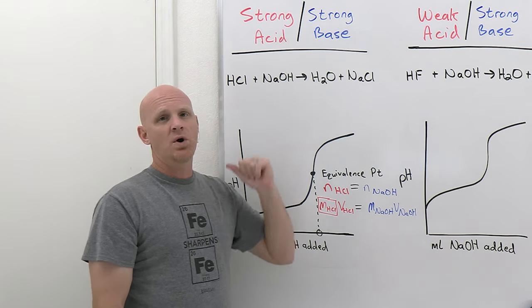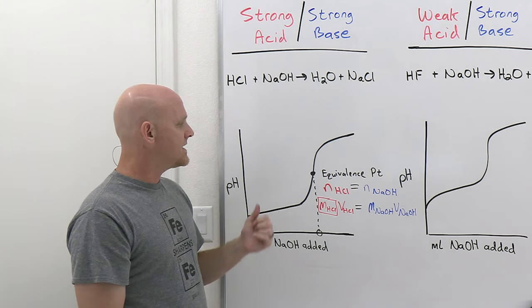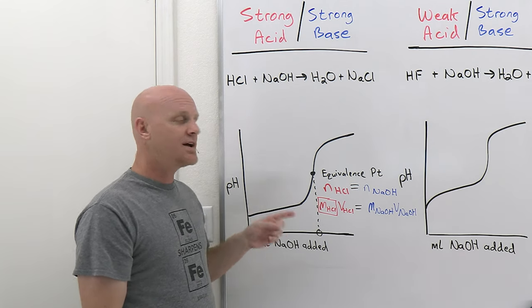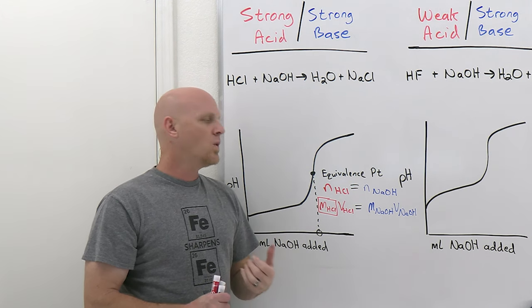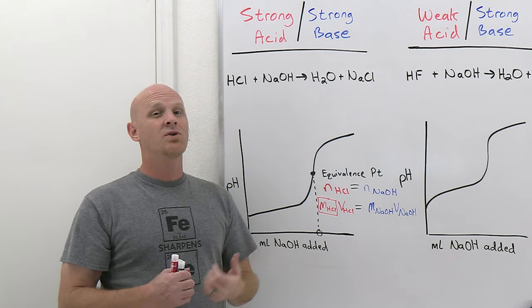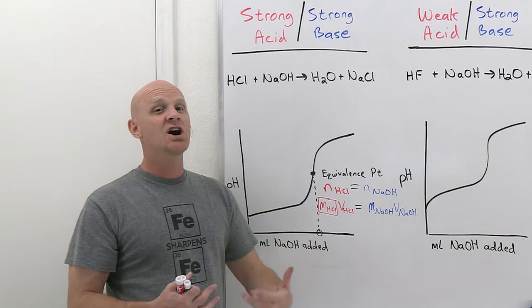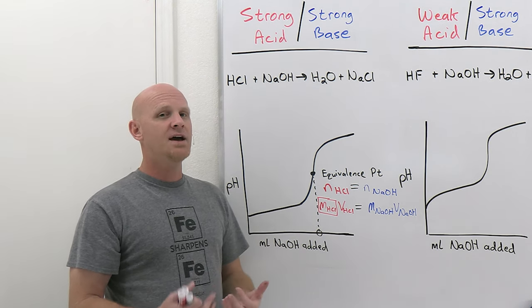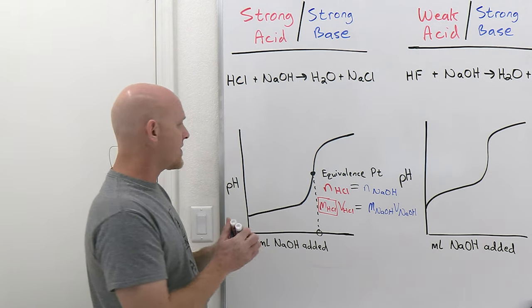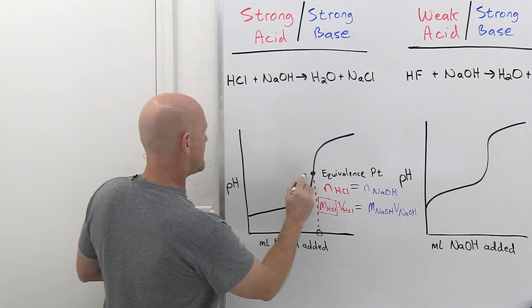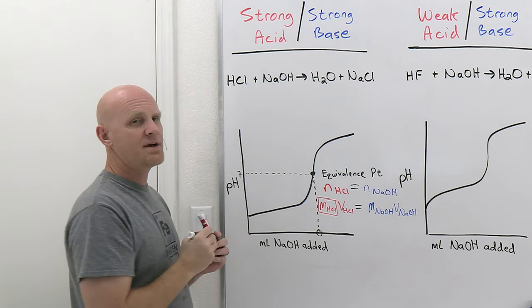How do you know if you've reached the equivalence point? You could map it out the entire time, adding a little NaOH and taking a pH reading, but that's not usually what we do. Normally, we use what's called an indicator — something that changes colors over a certain pH range. It turns out the equivalence point occurs right at pH 7 in a strong acid/strong base titration.